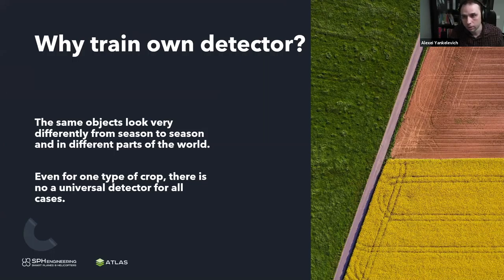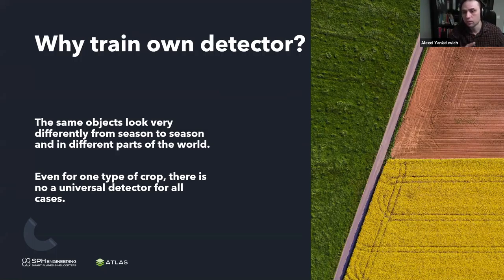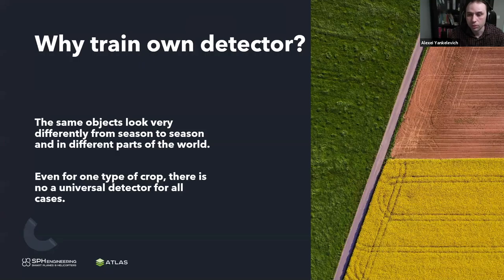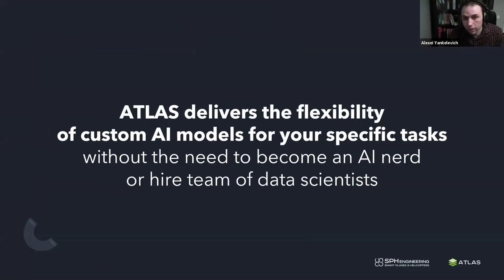We propose a simplified process that can help you to train your own detector on a relatively small amount of data, and you can do it in one or two hours to get first results — because the same objects look very differently from season to season in different parts of the world. Trees look very differently, crops look very differently — even one crop looks one way when it just appeared out of the soil, then in one month it looks different, in two months it changes again. That's why you need to train your detector and then adjust it from time to time. Atlas delivers this flexibility of custom AI models for your specific tasks, and you don't have to be an AI professional or have a team of data scientists.